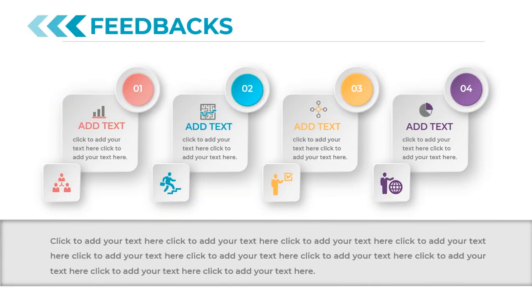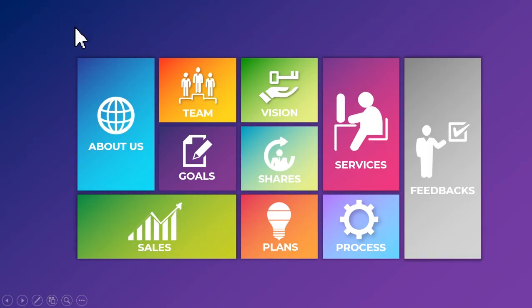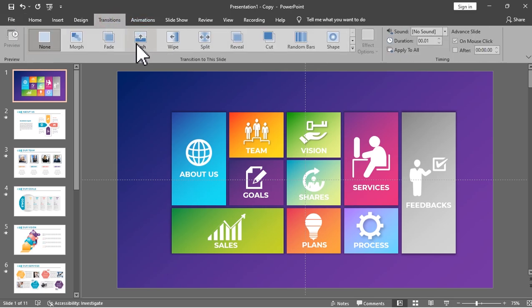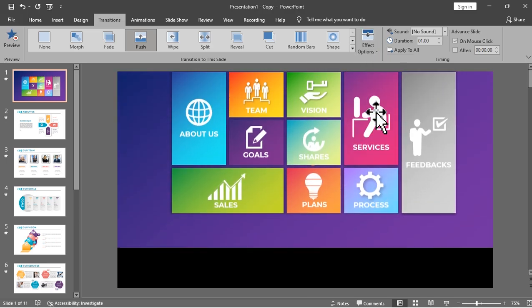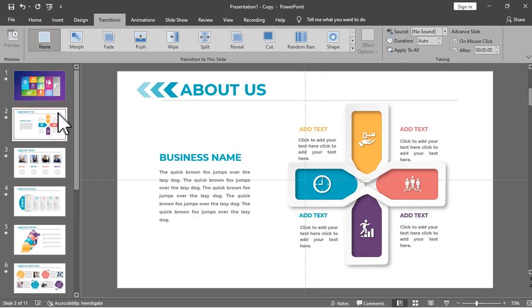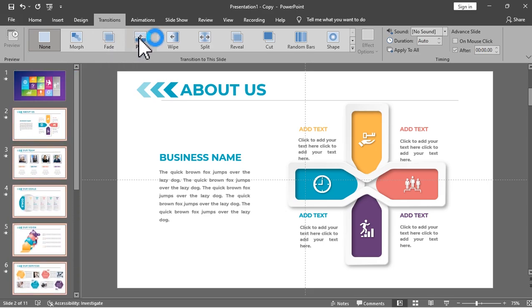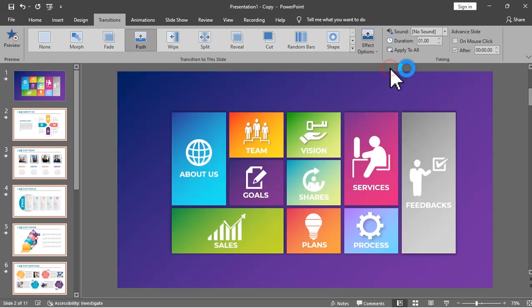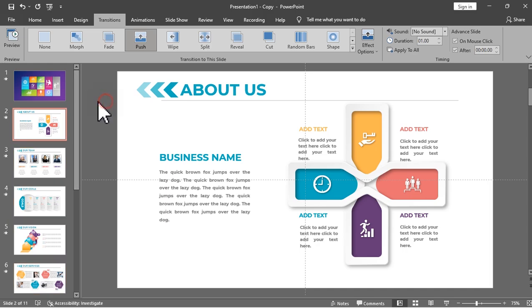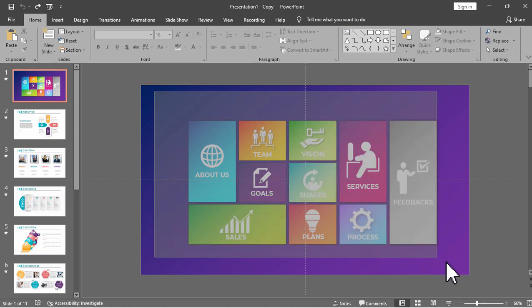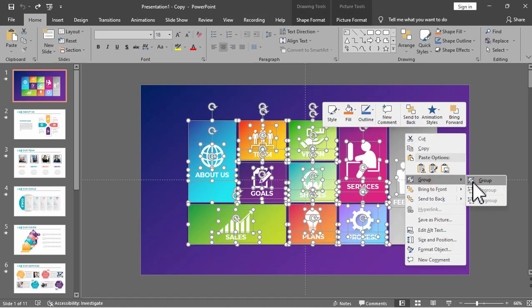Let us now try the back button to see if this will work. The last step is to add transition for the dashboard slide. I'm going to apply the push transition then select the direction from top. While for the remaining slides, we can also apply the push transition but this time the direction is from bottom, so it is the opposite direction of what we have with the dashboard slide. We can also group the dashboard elements so we can easily adjust them to the center.